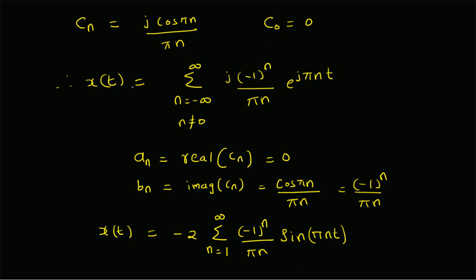Therefore, the complex Fourier series expansion of x of t is the summation n equals minus infinity to plus infinity of j times (minus 1)ⁿ divided by π·n times e to the power j·π·n·t. To find the trigonometric Fourier series, the cosine coefficients aₙ are 0 and the sine coefficients are (minus 1)ⁿ divided by π·n. Therefore, x of t equals minus 2 times the summation n equals 1 to infinity of (minus 1)ⁿ divided by (π·n) times sin(π·n·t). Thanks for watching.